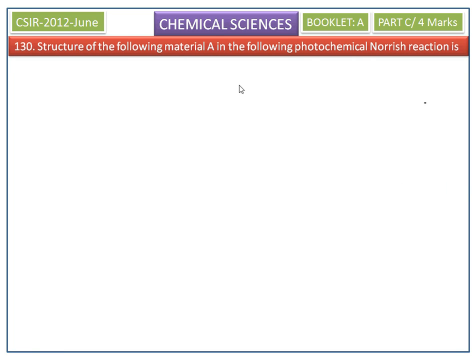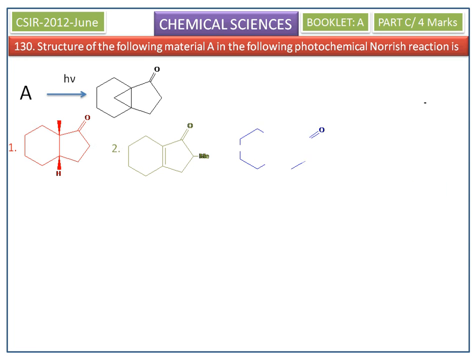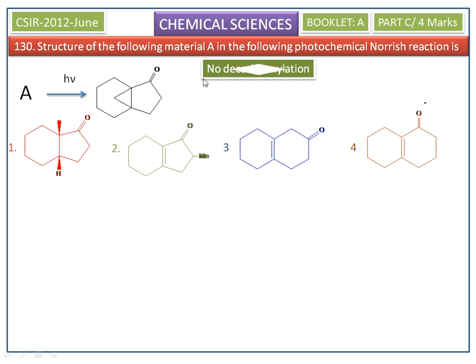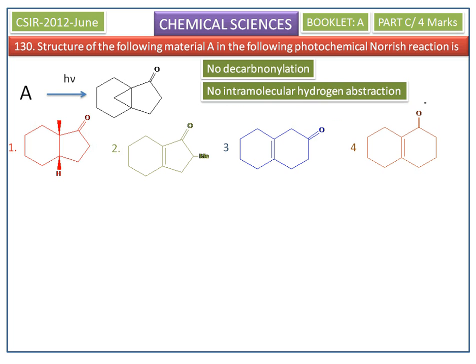We need to find the structure of material A in the following photochemical Norrish reaction. The options are shown here. From the product observation, we can say there is no decarbonylation because in the product it has a carbonyl group. There is no intramolecular hydrogen abstraction since in the product there is no unsaturated aldehyde, ketone, or ketene.